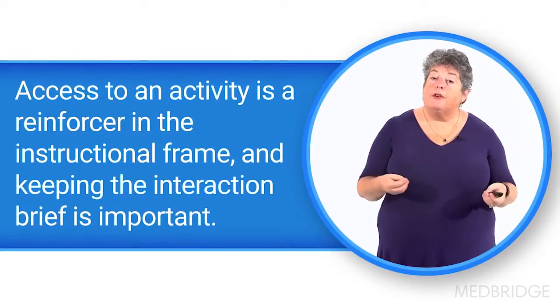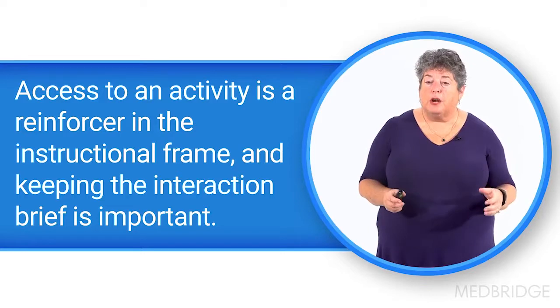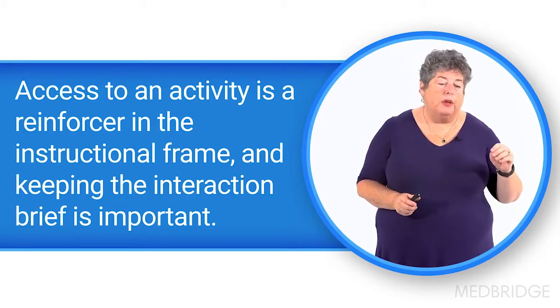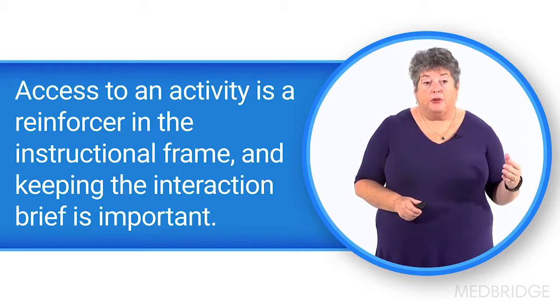I'm going to keep the interaction brief. Unlike more decontextualized instruction where I may be sitting at the table and repeating many trials — point to lion, point to tiger — in this context, I'm really doing one trial, letting the child get back to the activity, and then moving on. But you can see within this choice-making framework, there's a discrete trial.